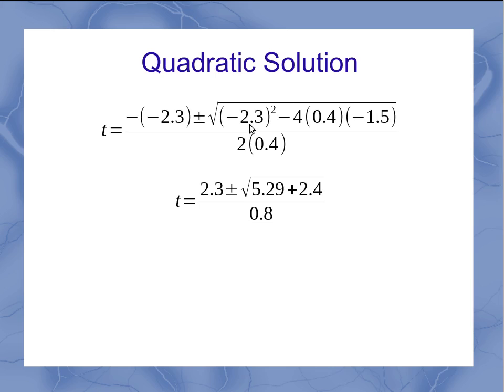Do be careful on this squared here, because if your b is negative, it's the negative number that's squared. So it's negative 2.3 times negative 2.3, and so that should always give you a positive number.